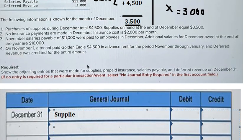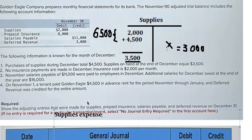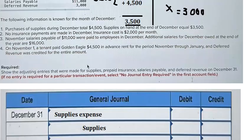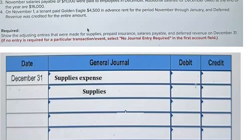So that means we have supplies expense and supplies on credit — the supplies on credit is about 3000.